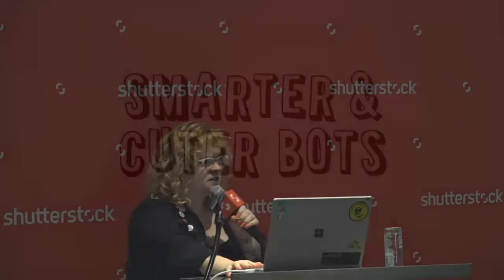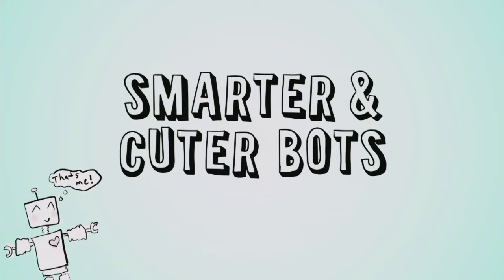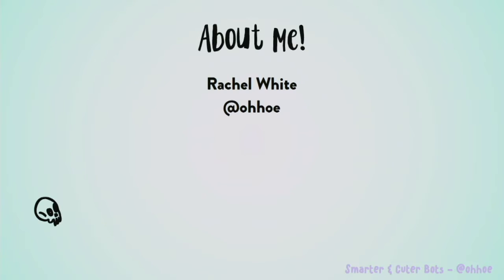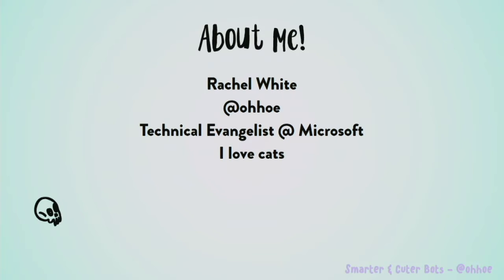Hi, I'm here today to talk to you about smarter and cuter bots, like this little one that I drew. I'm going to tell you a little bit about myself so you can get my thought process behind why I do things the way that I do. My name is Rachel White, I am @oho on Twitter, I'm a technical evangelist at Microsoft. Previously I was a software engineer at IBM Watson and Adobe Behance, and then I was like, I really hate writing production code, so now I'm an evangelist and I get to build cool stuff all the time. I love cats, I love cute things, and I really love making Twitter bots especially with Node — it's super easy and super fun and I'm going to walk through making one today.